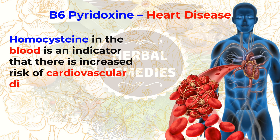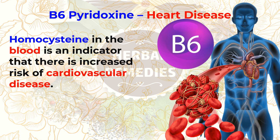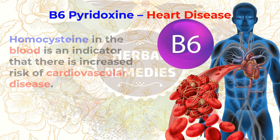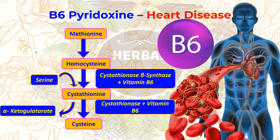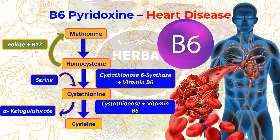Vitamin B6 is needed to remove homocysteine from the blood by converting homocysteine to cysteine, a non-essential amino acid important for making protein and other metabolic functions. In another process, folate and vitamin B12 remove homocysteine from the blood by converting it to methionine, an antioxidant which helps protect the body from damage caused by ionizing radiation.